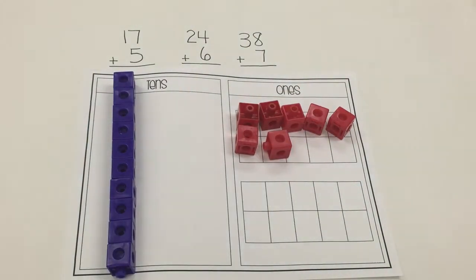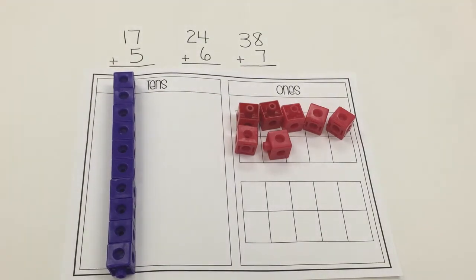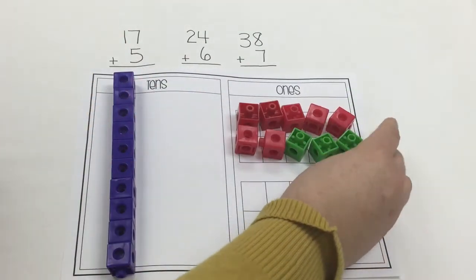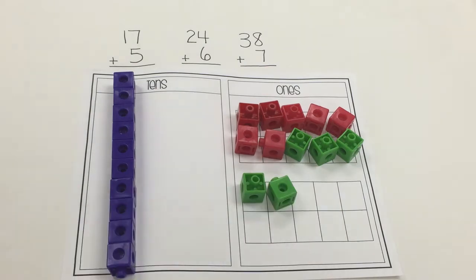And then I ask them, what are we adding to 17? So they'll put 5 more 1s. They're going to always fill the first frame, the first 10 frame, the top one first. So we don't separate the two pairs of blocks.